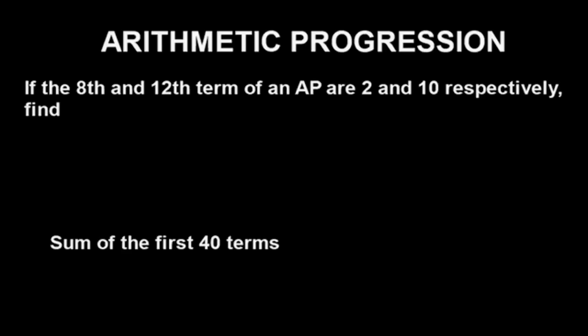Ensure you stay with me till the very end of this video because you will find arithmetic progression very simple with the Casio calculator. Before we get the calculator, let's quickly look at the question. The question says: if the 8th and 12th terms of an AP are 2 and 10 respectively, find the sum of the first 40 terms.